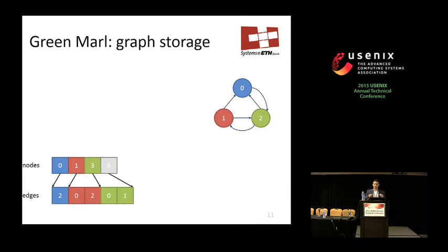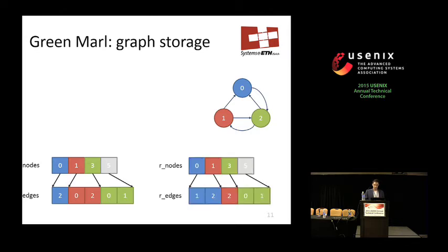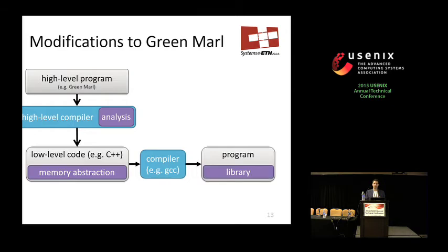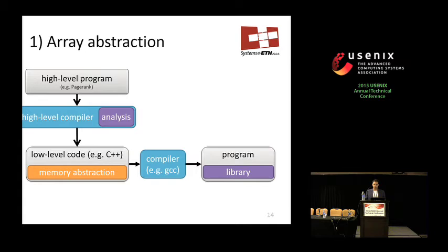For efficient access we also need a reverse lookup to find inward neighbors. Now let me show how you compile a typical GreenMile program. You start with your program — for example PageRank — which is translated by a high-level compiler to low-level C or C++ code, and then compiled to a binary. Shoal modifies three parts: it adds an analysis component to the high-level compiler, a memory abstraction to the low-level C code, and a runtime library that programs link against.